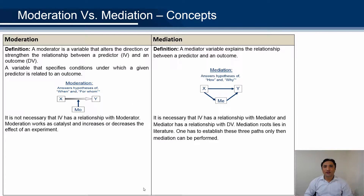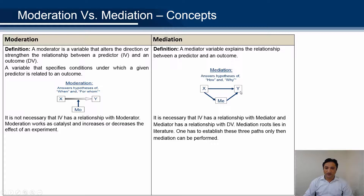For moderation, it is not necessary that the IV predicts the moderator. On the other hand, for mediation, it is necessary that the IV predicts the mediator. Mediation lies in the literature review. You can see that X predicts Y but X does not predict the moderator. In mediation, the IV predicts the DV, the IV predicts the mediator, and then the mediator predicts the dependent variable. One has to establish these three paths before mediation can be performed.